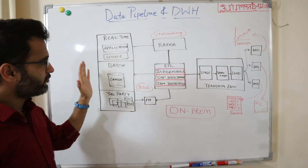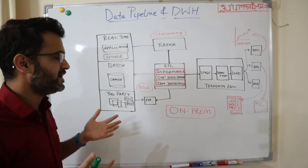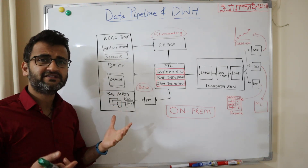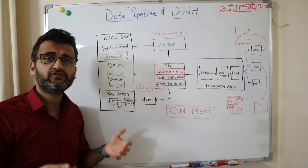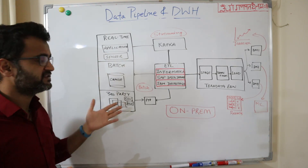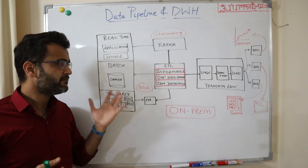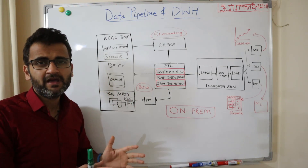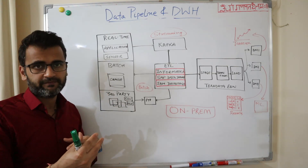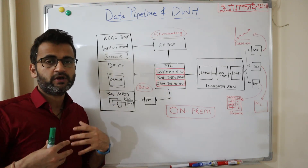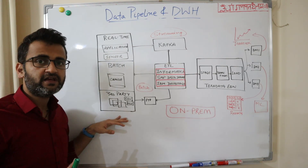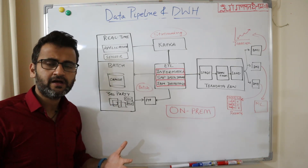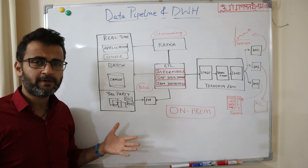For batch data — which I think you all already know — it could be any traditional OLTP system residing on-prem. In this case I've taken an Oracle system; it could be your sales or inventory database, your marketing database. This is bounded data because there is a specific time and limit to which we take the data in chunks — that's why it's called batch data. There are also third-party data sources — vendors and suppliers who send data in CSVs or Excel files.